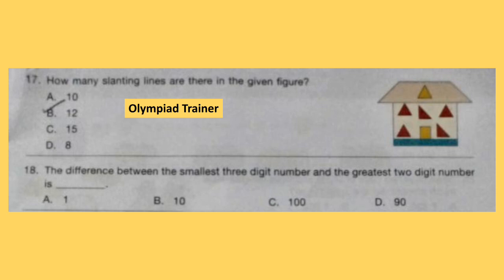Question 17. How many slanting lines are there in the given figure? You can pause the video and count. The correct answer is option B — there are 12 slanting lines in the given figure.